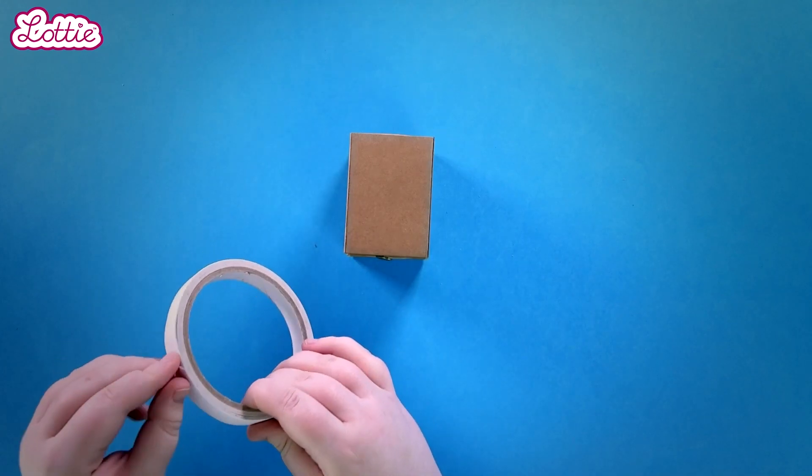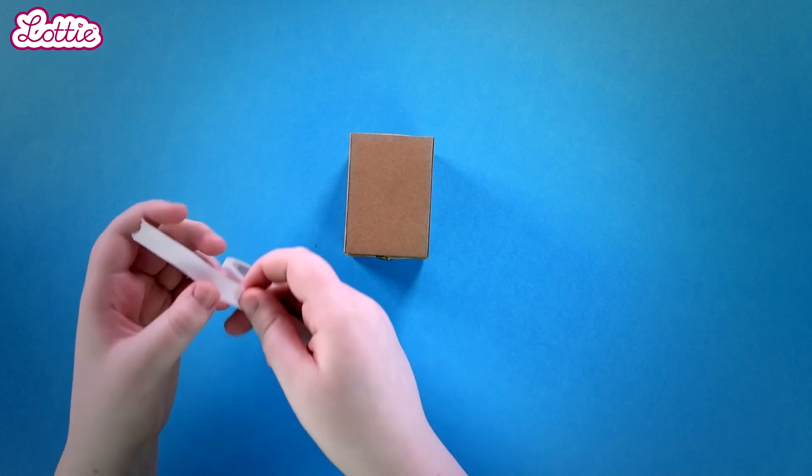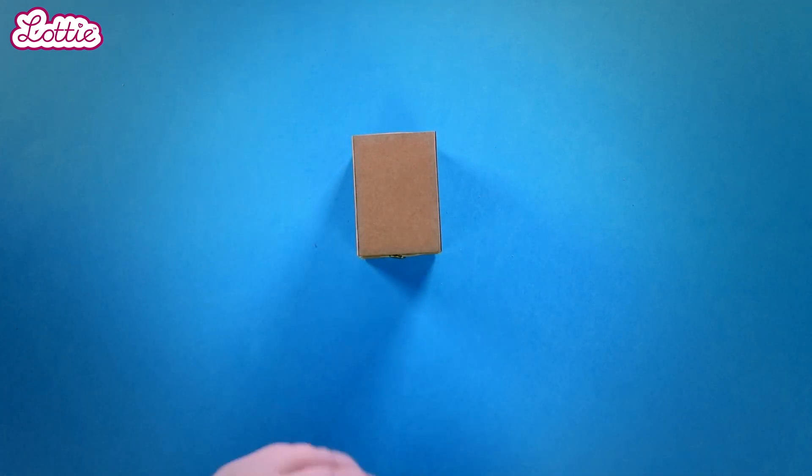Okay, next we add some tape to the top and one side of the drawers. As before, it's okay to use glue.